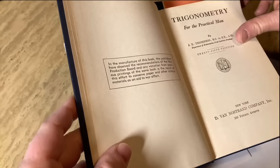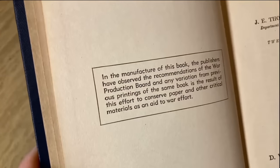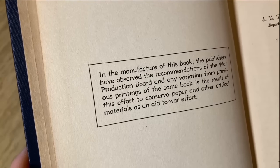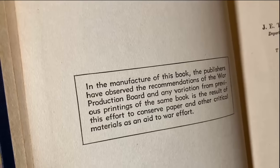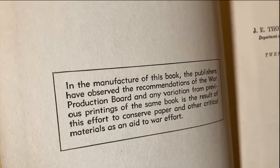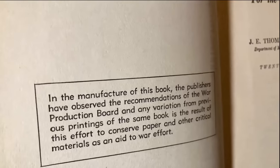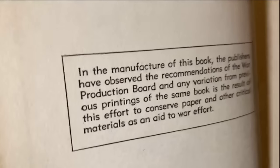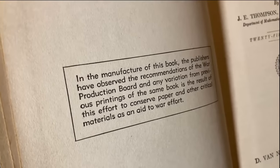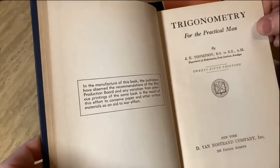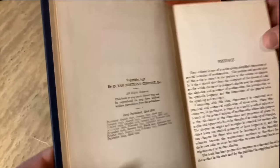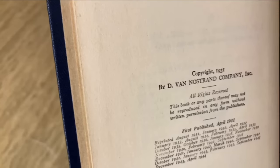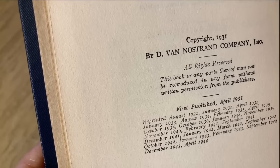So here's my older copy of Trigonometry for the Practical Man by Thompson. So this one has a different, let's just take a quick look at the copyright on this one. Oh, look at this. Look at this. In the manufacture of this book, the publishers have observed the recommendations of the War Production Board. And any variation from previous printings of the same book is the result of this effort to conserve paper and other critical materials as an aid to war effort. Wow. Wow. The country was at war, right? The United States was at war and there were issues with paper. That's pretty crazy.